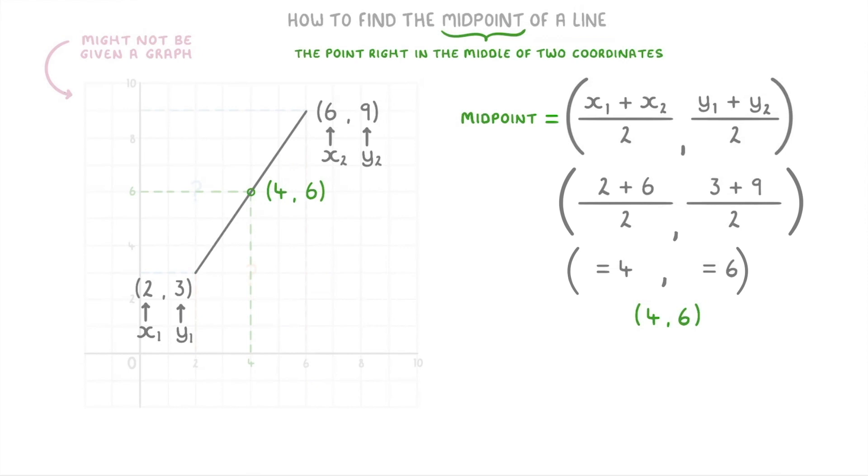Now if we take a closer look at this formula for a moment, you might notice that it's actually written like a pair of coordinates, which is why it has the brackets on the sides and the comma in the middle.